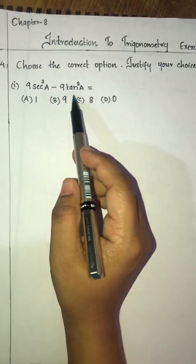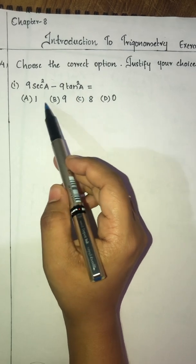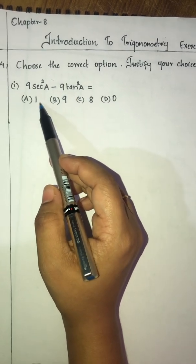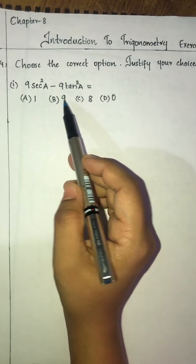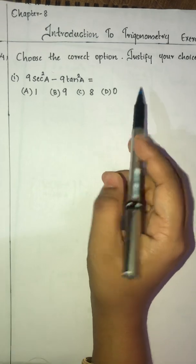9sec²A - 9tan²A is equal to: option A is 1, option B is 9, option C is 8, and option D is 0.